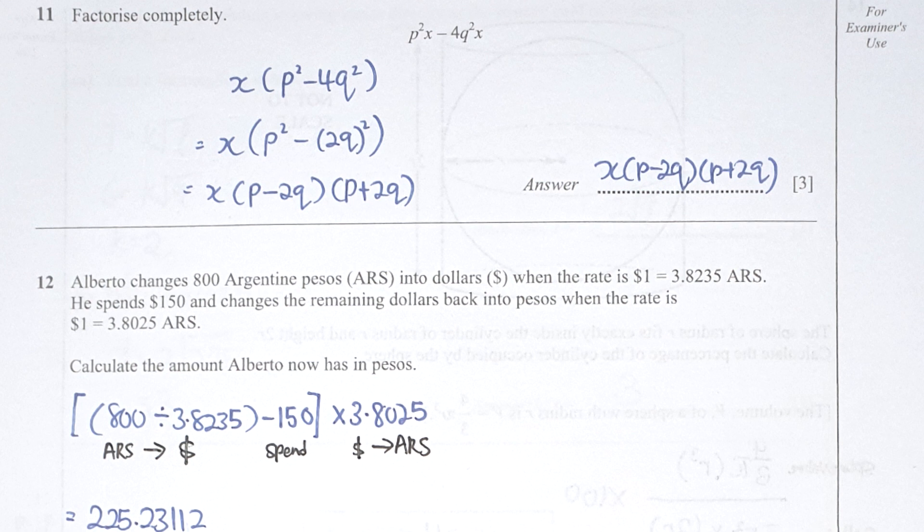Question 11: I first extracted x from both variables, leaving a balance of 8p squared minus 4q squared. I then converted the arrangement inside the bracket into p squared minus (2q) squared. Using the difference of two squares formula (a squared minus b squared), the result is x(p plus 2q)(p minus 2q).